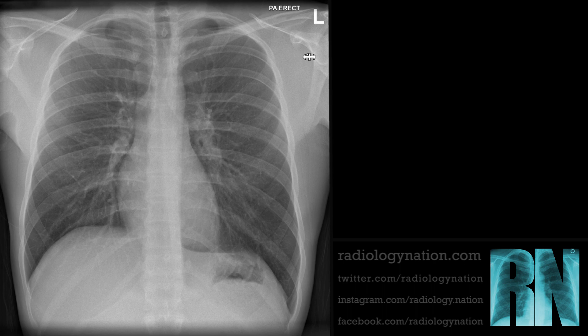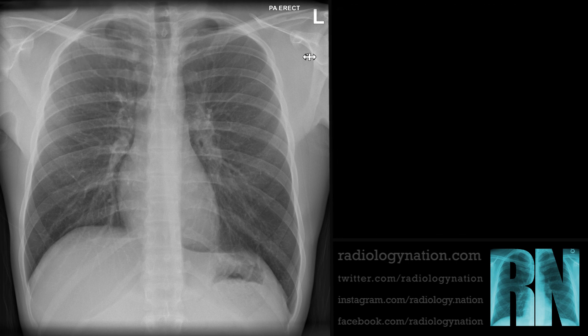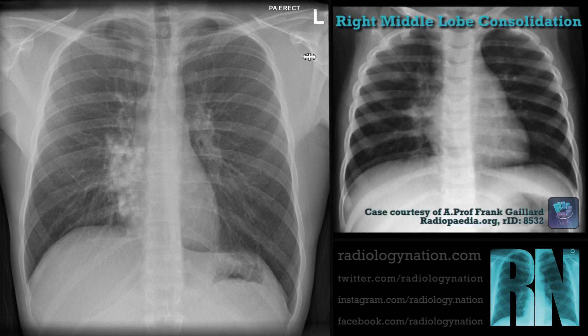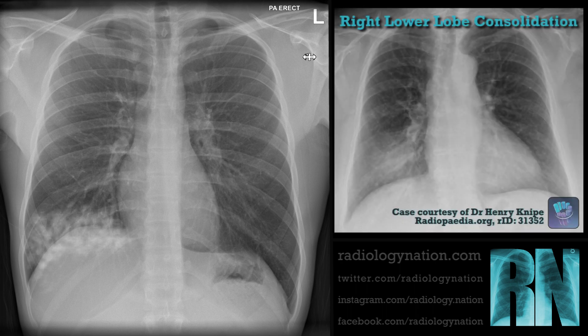We will now discuss the specific radiographic appearances of consolidation in each of the lobes. Consolidation in the right upper lobe will be seen high up in the right lung and will not obscure the heart border or any part of the diaphragm, though the right mediastinal contour may be lost. The right middle lobe abuts the right atrium, so consolidation in this lobe will obscure the right heart border. The right lower lobe sits on the right hemidiaphragm, and consolidation here can obscure the right diaphragmatic contour but will spare the right heart border.